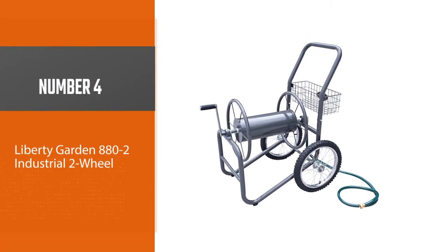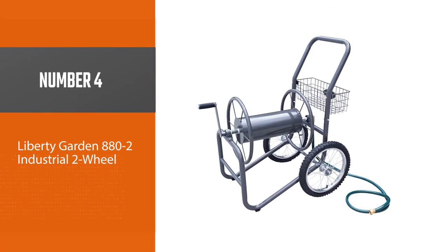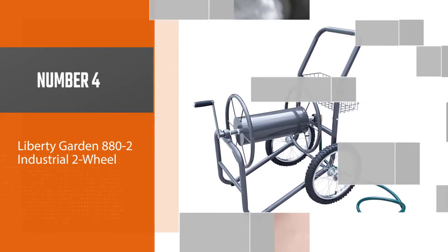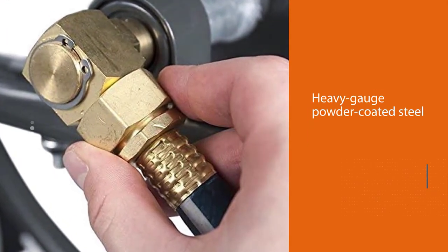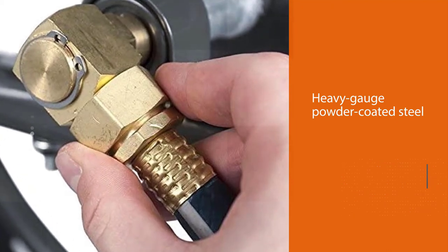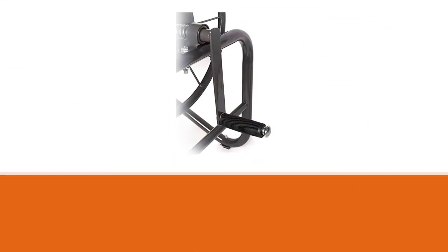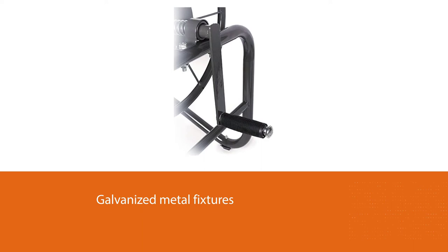Number four: Liberty Garden 882 Industrial Two Wheel. The best wheeled hose reel is this cart style option from Liberty Garden. Made of heavy gauge powder coated steel with galvanized metal fixtures and a glossy finish, it's just as durable as it looks.